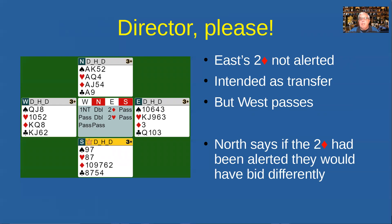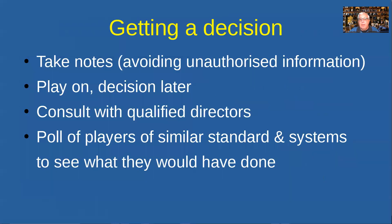Dealing with this at the table isn't practical, which is why I'm not covering it in these talks in detail. In practice, you take notes of what happened and why North feels disadvantaged, tell them to play on, and a decision is made later. The director consults other qualified directors, and in a real case like this you carry out a poll of players of similar standard who understand the system being played — clearly not something you can do fairly at the table.